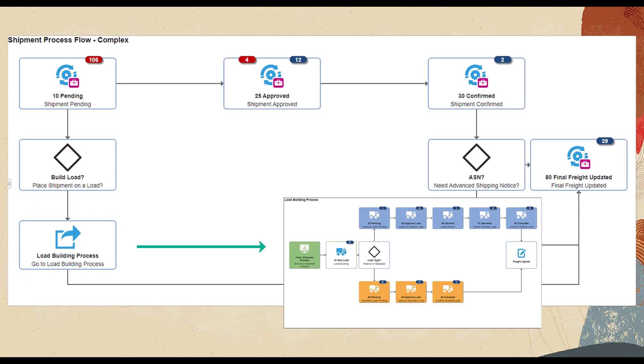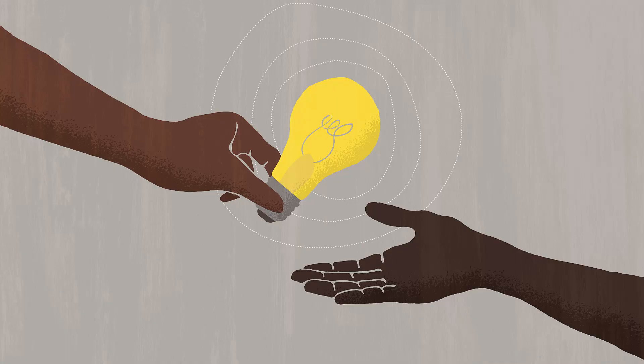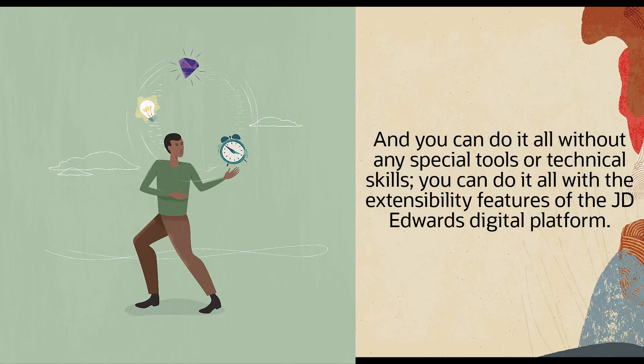Using these and other features of Enterprise One pages, you will soon be building pages that guide your users through their daily operations. Modeling your business processes and capturing metrics about those processes are the foundation of enterprise automation. And you can do it all without any special tools or technical skills — with the extensibility features of the JD Edwards digital platform.